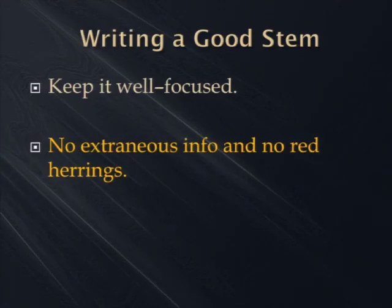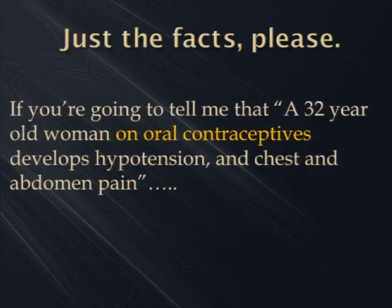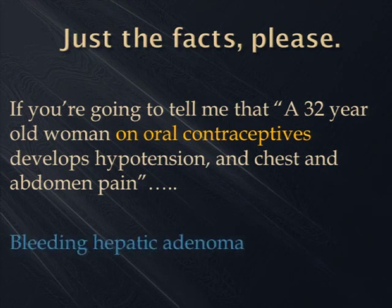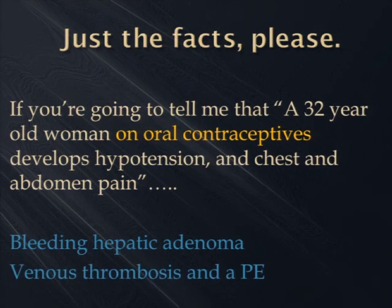We don't want to mess up the test taker with any extraneous info at all — no red herrings, just the facts. If you're going to tell me that a 38-year-old woman is on oral contraceptives and has hypotension and chest and abdomen pain, then you better be leading me to a bleeding hepatic adenoma or venous thrombosis and PE. Otherwise, don't tell me she's on oral contraceptives. If it's a clue, I sort of get it. If it's a complete red herring, leave it off.